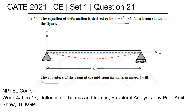We are given a simply supported beam with the origin of the coordinate axis at one of its ends, with the x and y directions as shown. We are expected to calculate the curvature at mid-span and report it. Candidates are encouraged to watch the NPTEL lecture cited below where this topic is handled in more detail.